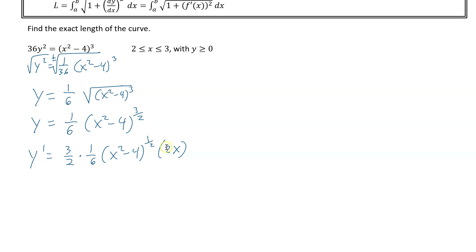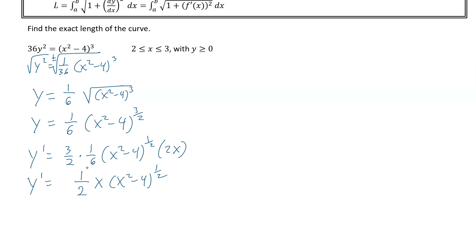That 2, because this is chain rule, will cancel with that 2. The 3 cancels and we end up with a half. So y prime equals x times the square root of x squared minus 4 to the 1/2. And so that would be our y prime.